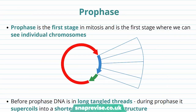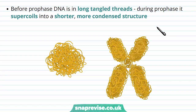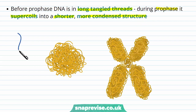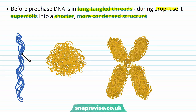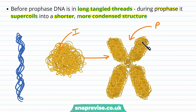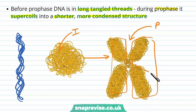The first stage is prophase. It's the first stage in mitosis and this is where we actually begin to see the chromosomes visually. Before prophase, all of the replicated DNA is in long tangled threads — very dispersed and hard to see. If you look down the microscope at the nucleus it just looks like a big tangled mess. But during prophase the DNA condenses and supercoils into a shorter, more condensed structure. Supercoiling is when long thin material like DNA winds itself about its own molecule until it becomes visible. Here we can see our sister chromatids lined up, connected by the centromere.